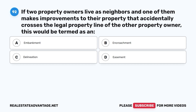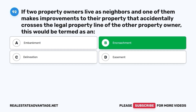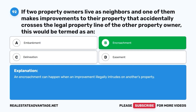Question 92. If two property owners live as neighbors and one of them makes improvements to their property that accidentally crosses the legal property line of the other property owner, this would be termed as: A. Embankment. B. Encroachment. C. Delineation. D. Easement. The correct answer is B. An encroachment occurs when an improvement illegally intrudes on another's property.